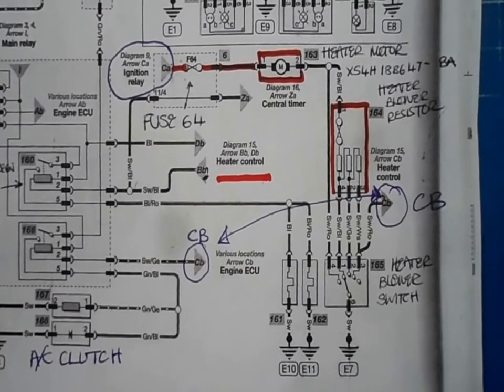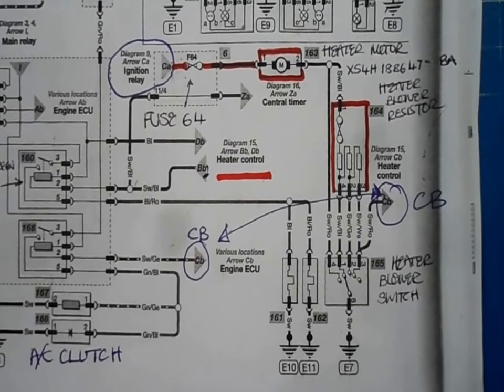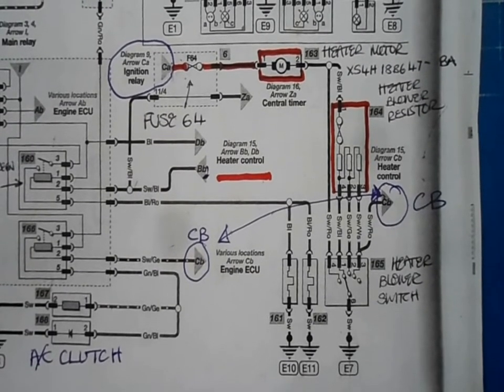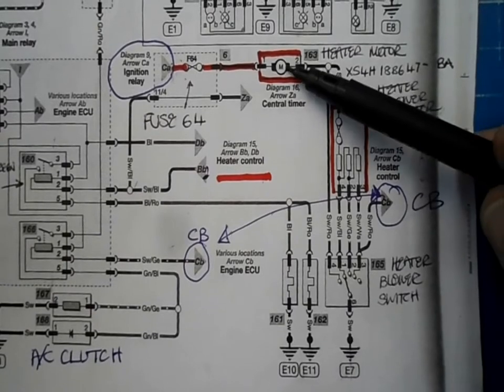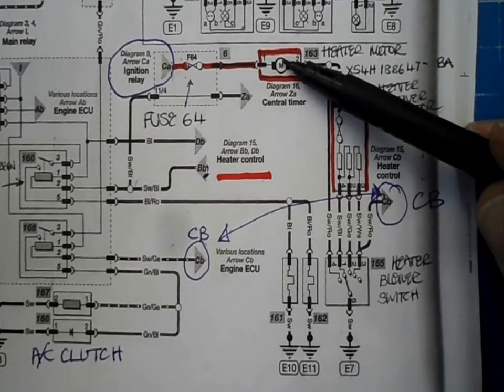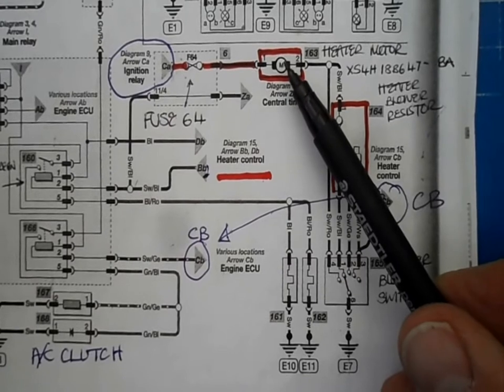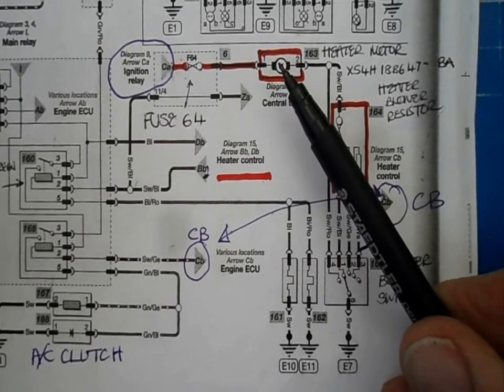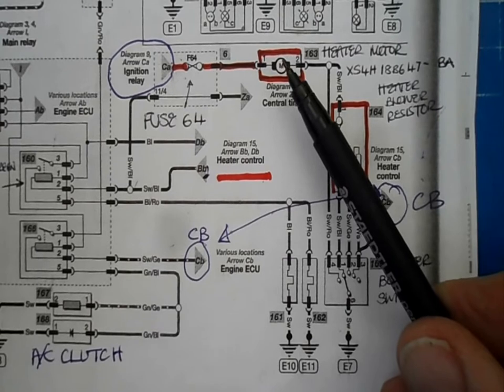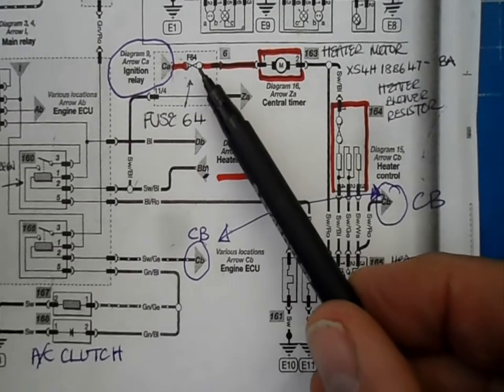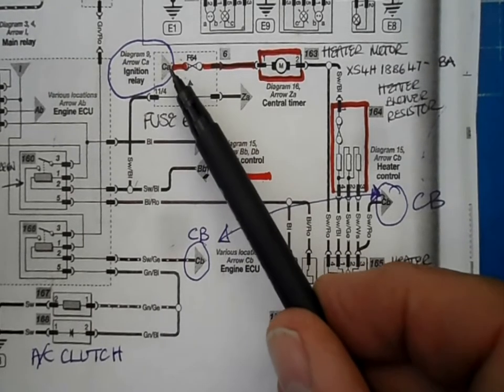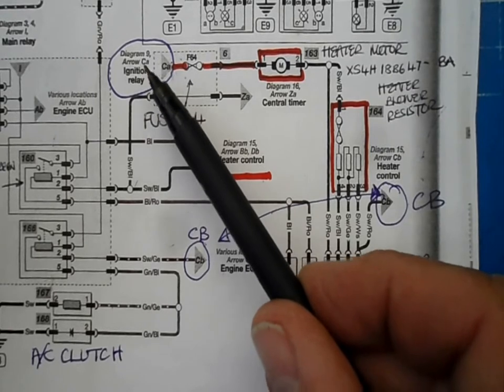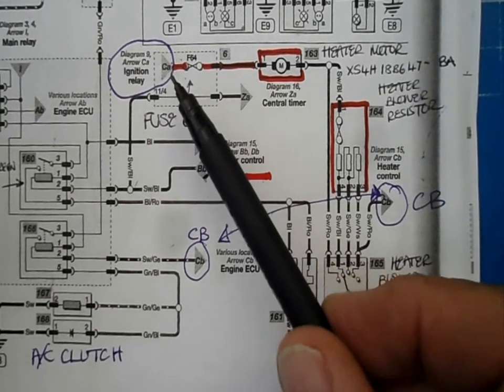So our fault is the motor, the fan heater motor which isn't working. There may be other issues but for now that is the symptom that we can recognise and see straight away. So let's start at the motor. So we need to see what is driving this motor, what is powering the motor. And if we work back from this, this is diagram 14 in the Heinz manual. So if we work back from the motor, we've got a fuse here, fuse 64. And that fuse is located in the ignition relay fuse box under the bonnet. So that is the engine fuse box.